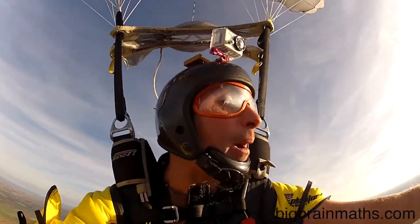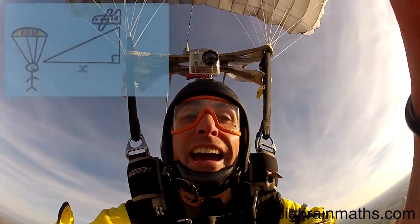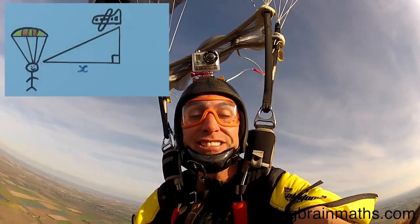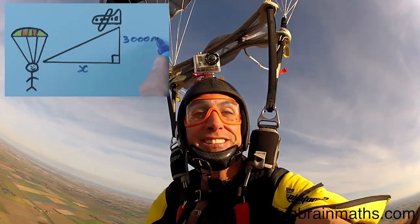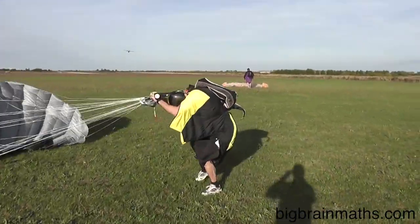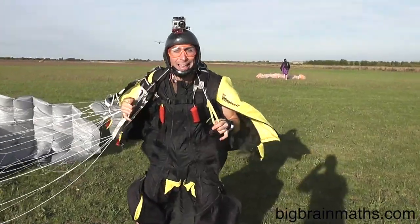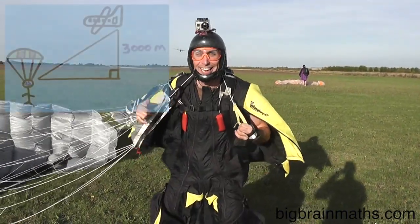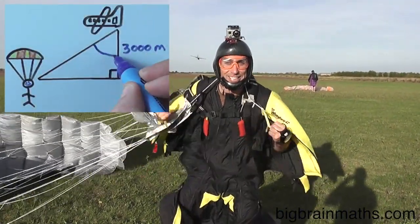Now I can tell by looking at my altimeter that I actually dropped a vertical distance of 3,000 metres in this jump. I can control the angle of my flight, and today I kept the angle at 70 degrees.